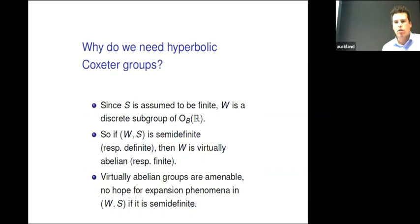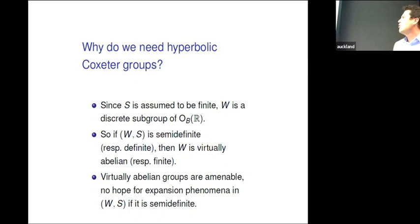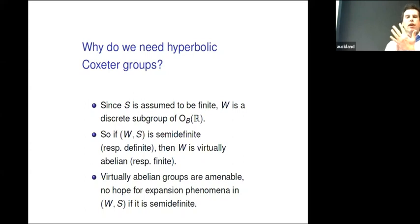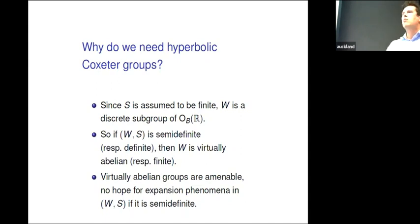So why do we need hyperbolic Coxeter groups? Not all Coxeter groups are hyperbolic. You want expansion, and you cannot do it with a finite group W because it would be hard to find infinitely many quotients. The next best thing would be semi-definite forms — things like Ã-type diagrams — but the problem is these groups are virtually abelian. They look like tessellations of the Euclidean plane generated by reflections and translations, and virtually abelian groups are bad for expansion. So basically all the ones that are not hyperbolic you can cast aside as unsuitable, and we need to look at the hyperbolic ones.